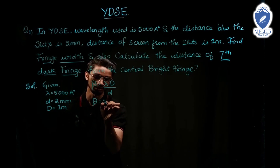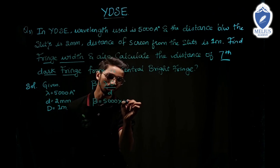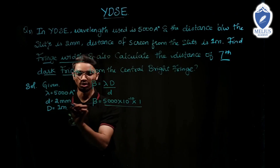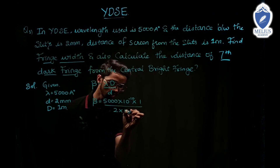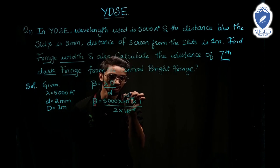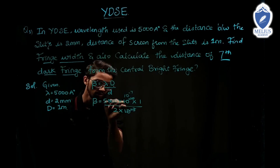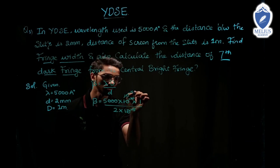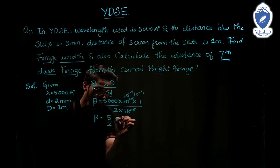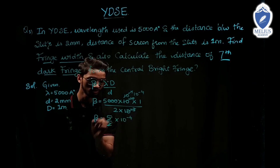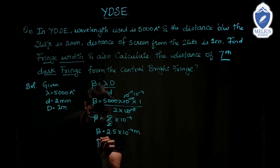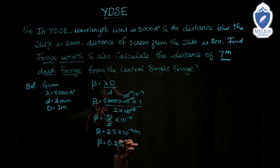Beta equals 5000 into 10 to the power minus 10 meter (since 1 Angstrom = 10⁻¹⁰ m), into capital D = 1 meter, divided by small d = 2 millimeter = 2 into 10 to the power minus 3 meter. Cancelling 10⁻¹⁰ and 10⁻³ gives 10⁻⁷, then cancelling further gives 10⁻⁴. So beta equals 5 by 2 into 10⁻⁴, which is 2.5 into 10⁻⁴ meter or 0.25 millimeter.